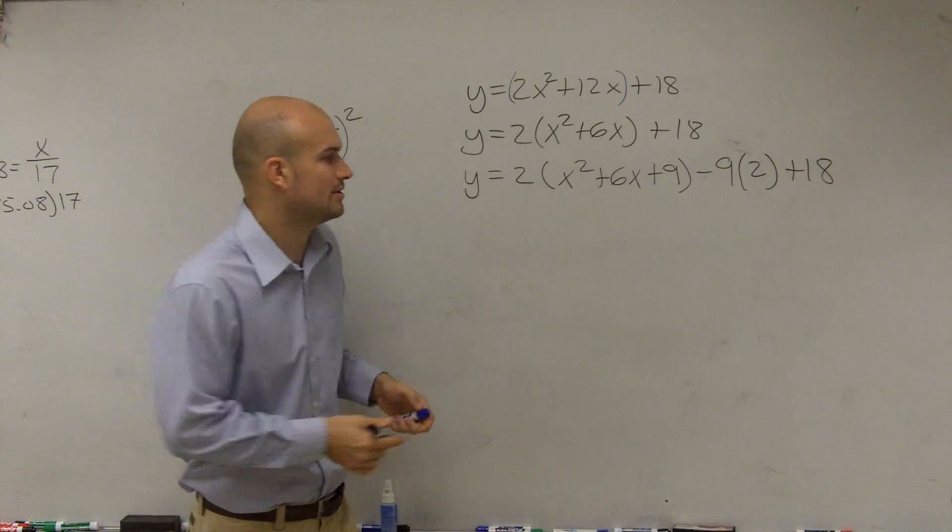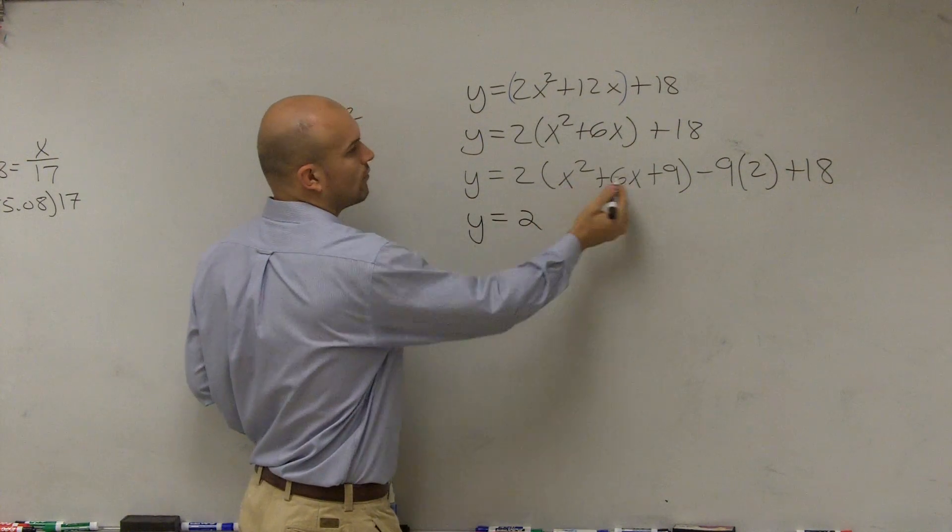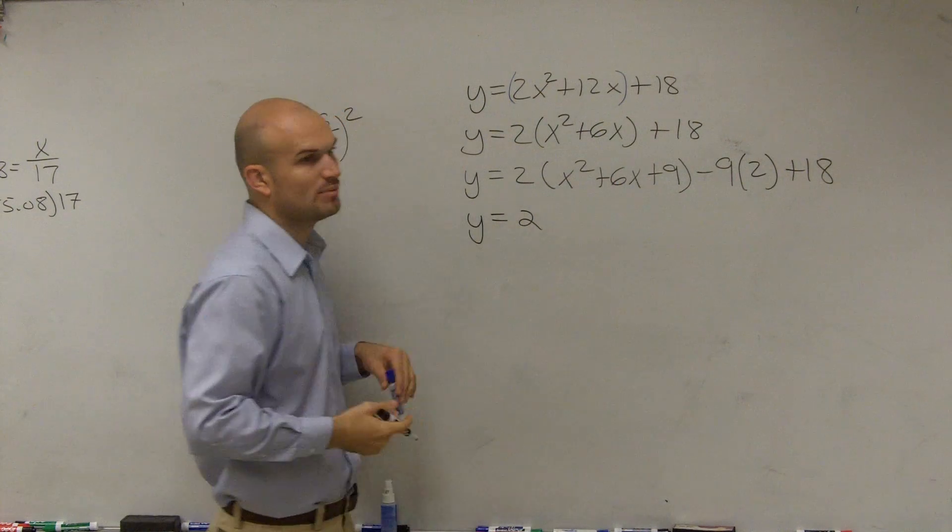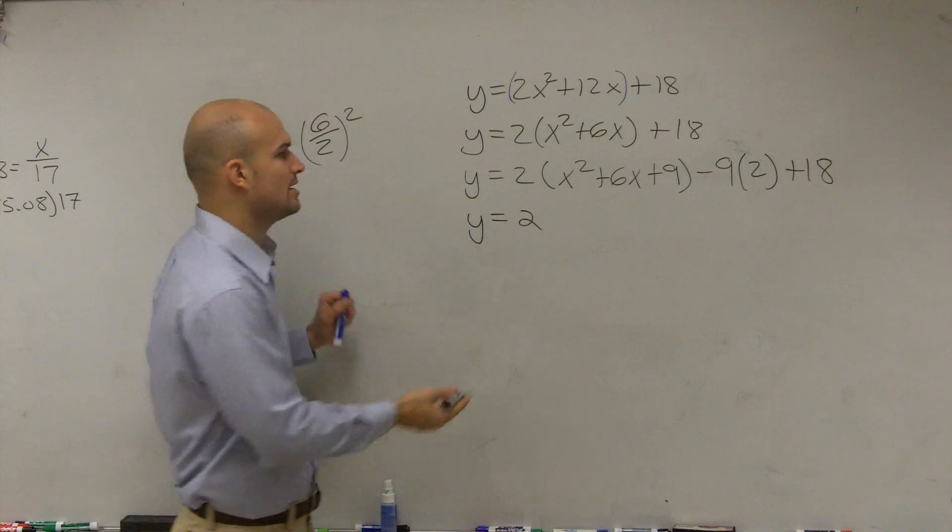So now, when I go ahead and complete my square, I can say, well, this is a perfect square trinomial, so what does it look like as a perfect square?